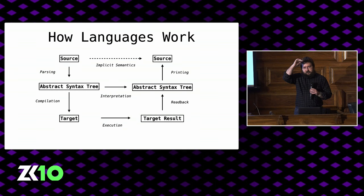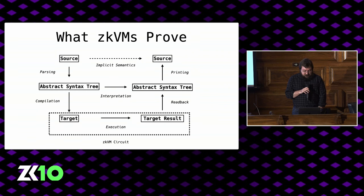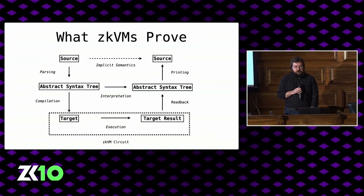There are a lot of really exciting projects right now that implement general-purpose virtual machines that are provable under zero-knowledge — projects that prove the RISC-V ISA, the LLVM IR, the Ethereum virtual machine, WebAssembly, and others. We're currently in a Cambrian explosion of different approaches in ZK, which is awesome. But I want to be really precise about what ZKVMs do and what they don't do.